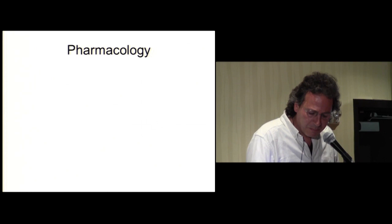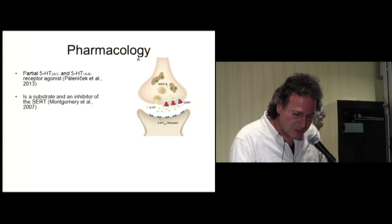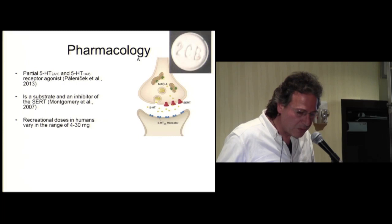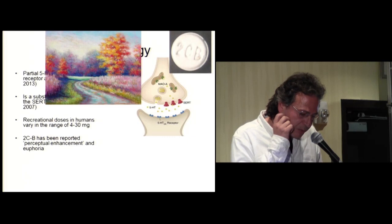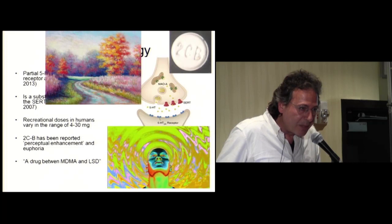From a pharmacological point of view, it's a partial 5-HT2A, 2C, and 1A/B receptor agonist. Also it's a substrate and an inhibitor of the serotonin transporter. The recreational doses in humans vary in the range of 4 to 30 milligrams. 2CB has been reported as perceptual enhancement and euphoria, and popularly has been defined as a drug between MDMA and LSD.